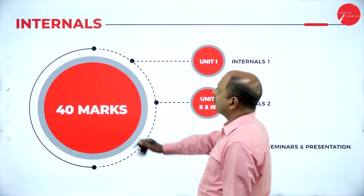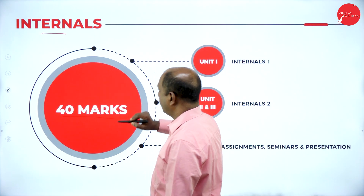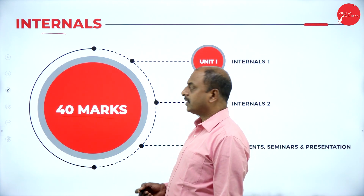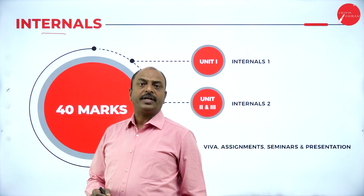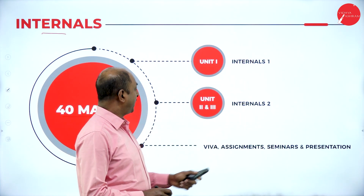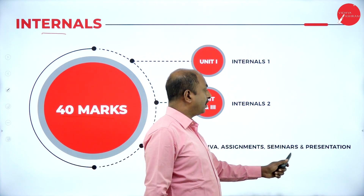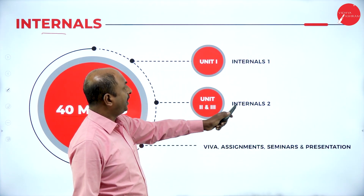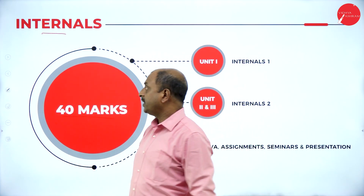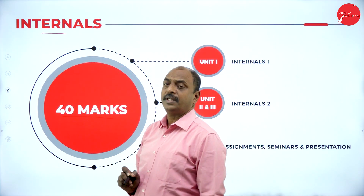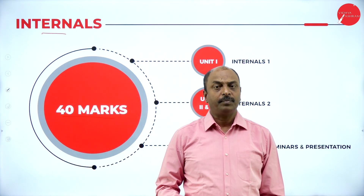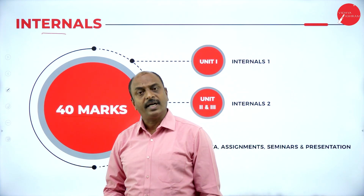For internals, it is 40 marks, making the total paper 100 marks — 60 marks theory and 40 marks internal. The 40 internal marks are divided among Internal 1, Internal 2, VIVA, Assignment, Seminar, and Presentation. So internal is 40 marks and theory is 60 marks, totalling 100 marks for the subject Artificial Intelligence and Applications.